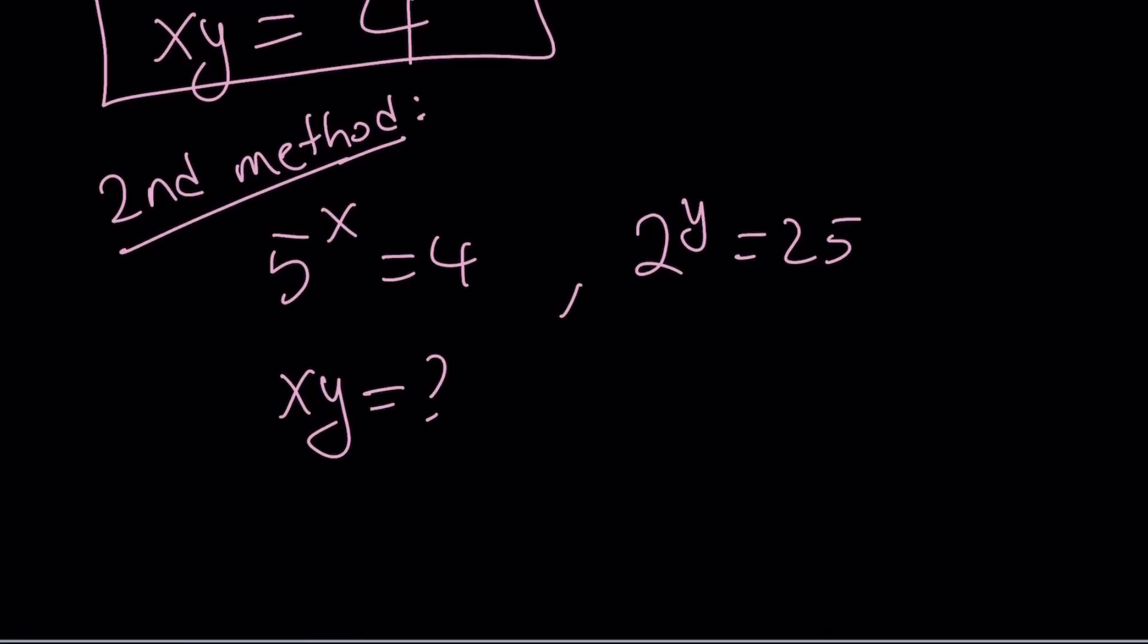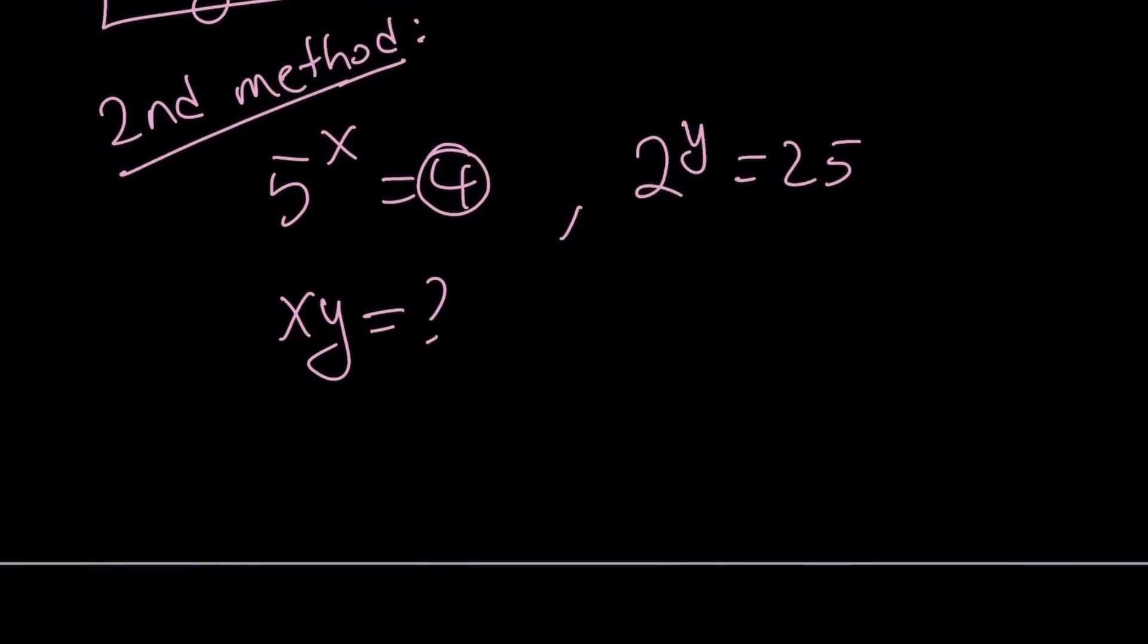So we have these two equations. And we're going to do the following. We're going to take advantage of this fact. 4 is 2 squared. So let's go ahead and write it that way. 5 to the x is 2 squared. And from the second equation, 2 to the y is 5 squared.